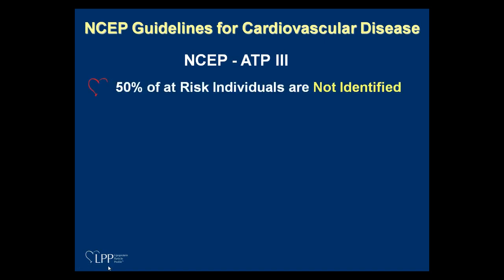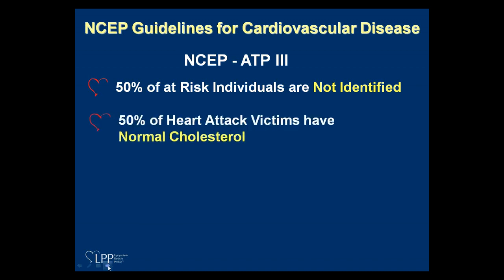ATP-3 — we've been under those guidelines since 2001. The main thing that came from ATP-3 that's really important is that 50% of the individuals at risk are not identified by the guidelines. They recognized that in ATP-3; there wasn't a solution per se, but they alluded to one.